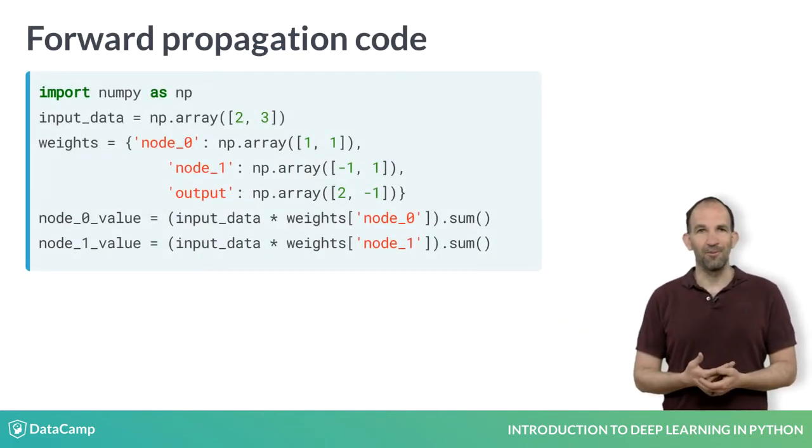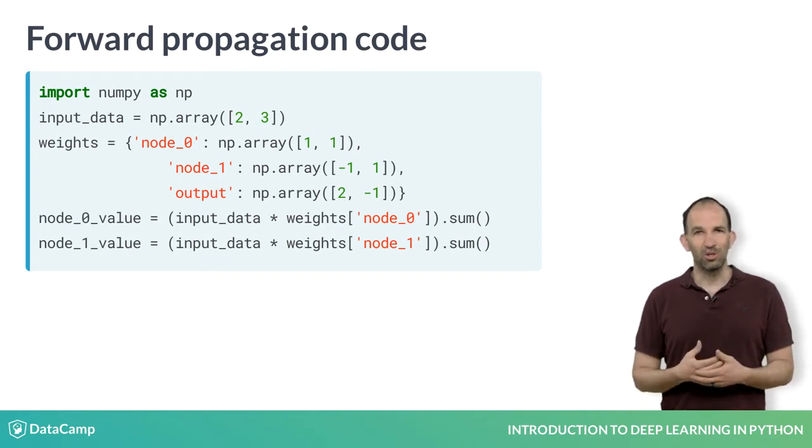First, we import NumPy for some mathematical operations. We've stored the input data as an array. We then have weights into each node in the hidden layer and to the output. We store the weights going into each node as an array, and we use a dictionary to store those arrays.